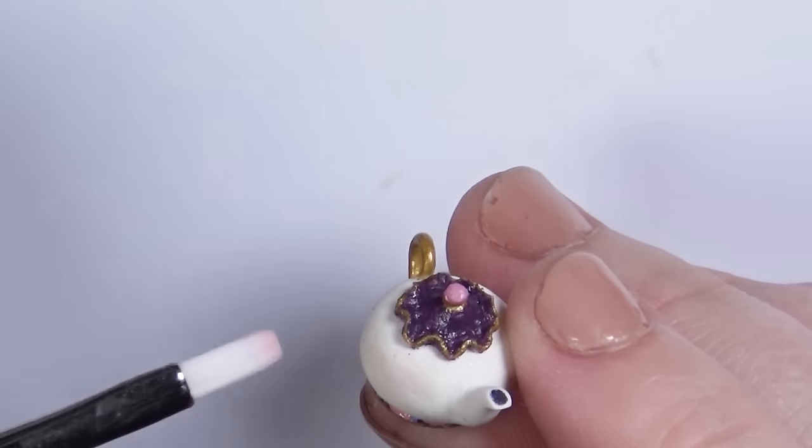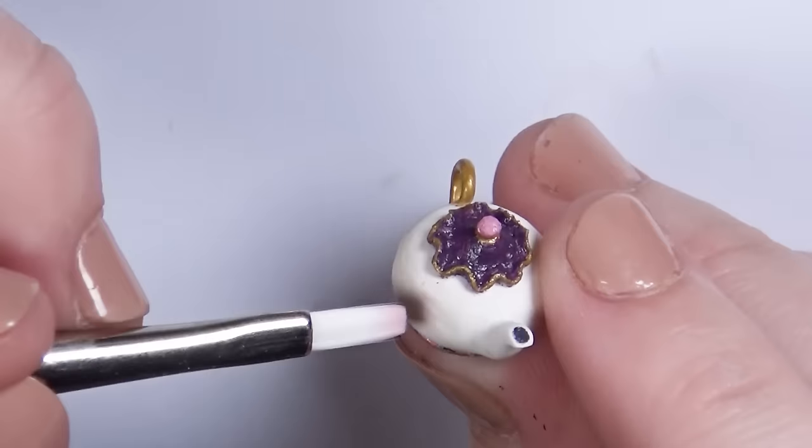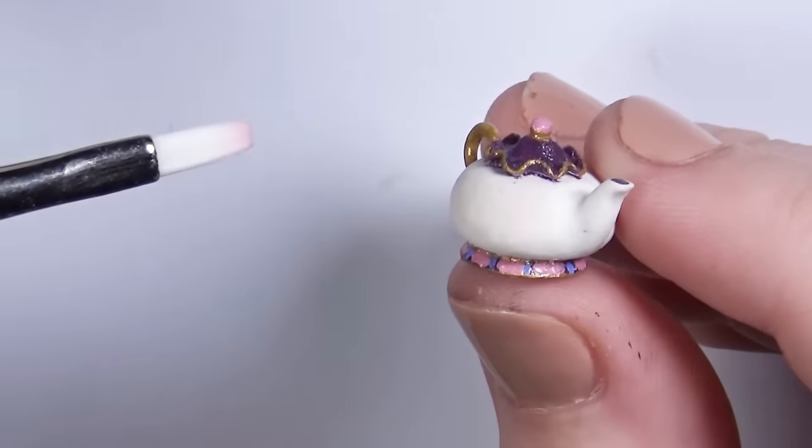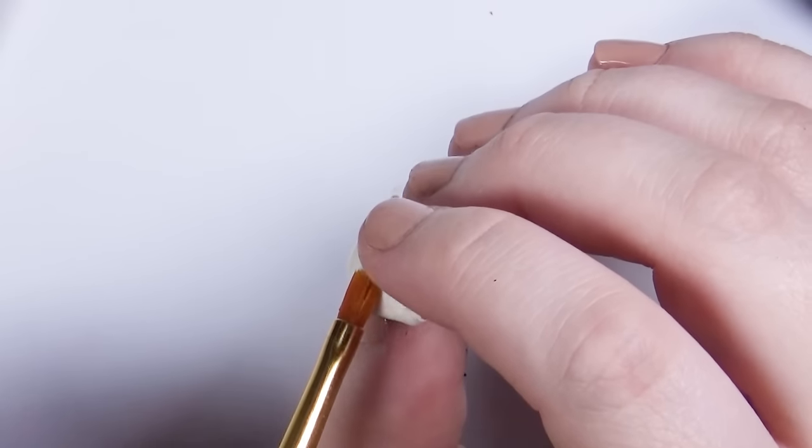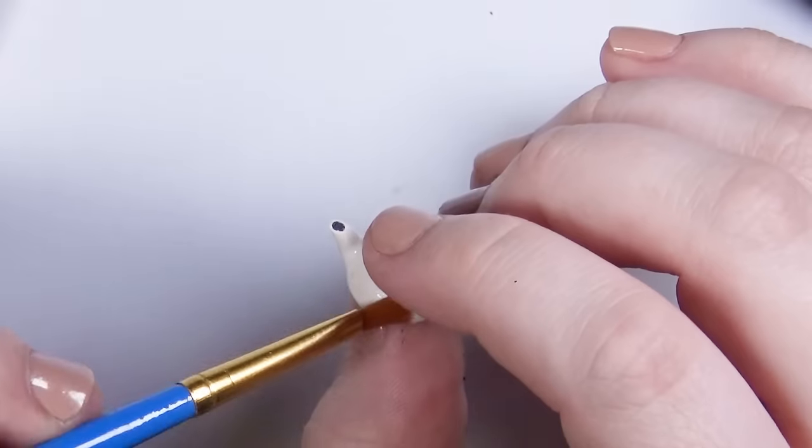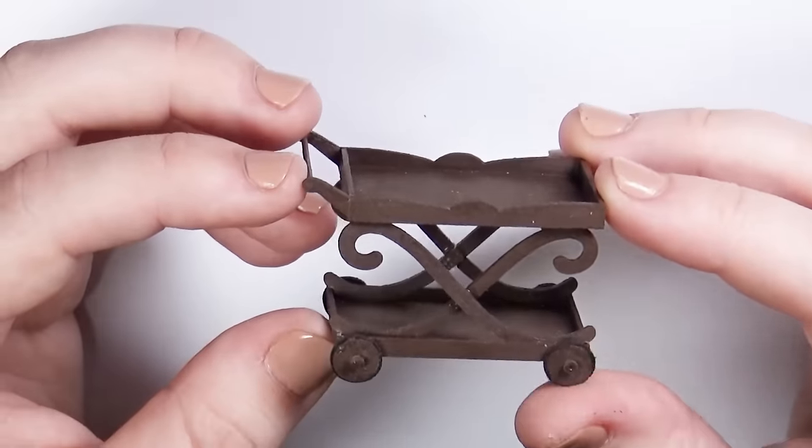I left these pieces faceless, but I added Mrs. Potts blush marks just to add a little bit more character to the set. And finally, after everything was done drying, I coated the tea set with Polycrylic Glossy Finish. This set came together better than expected.